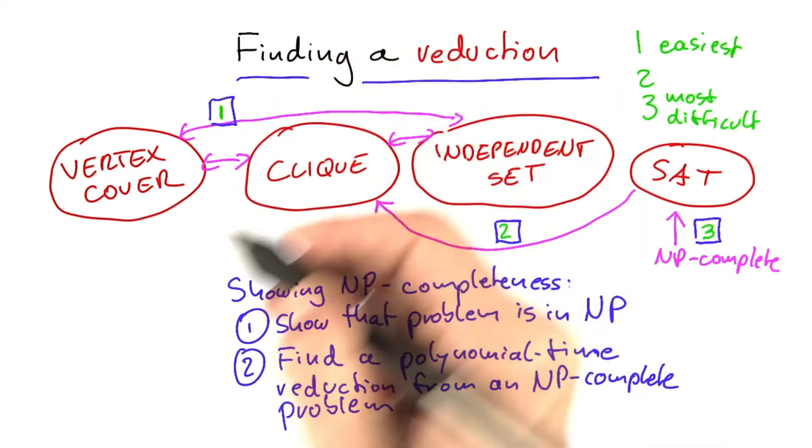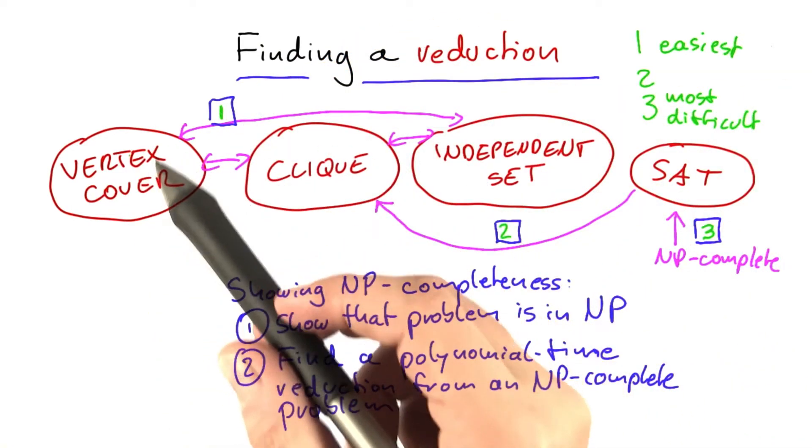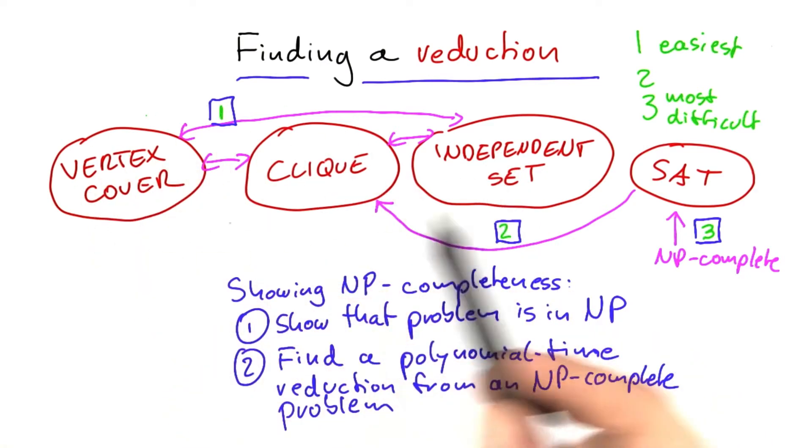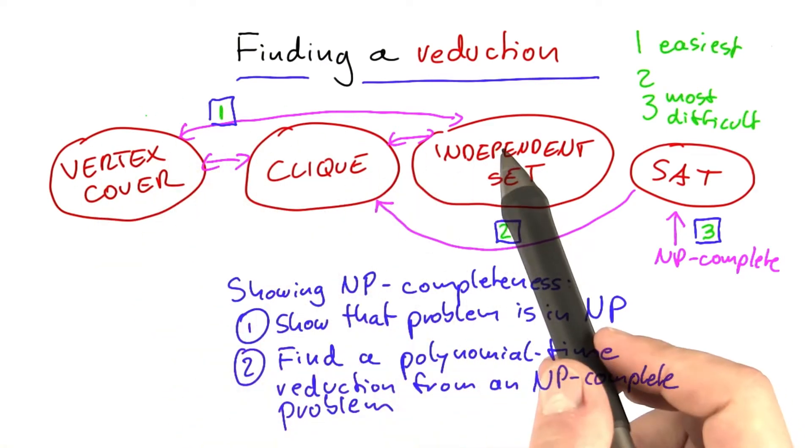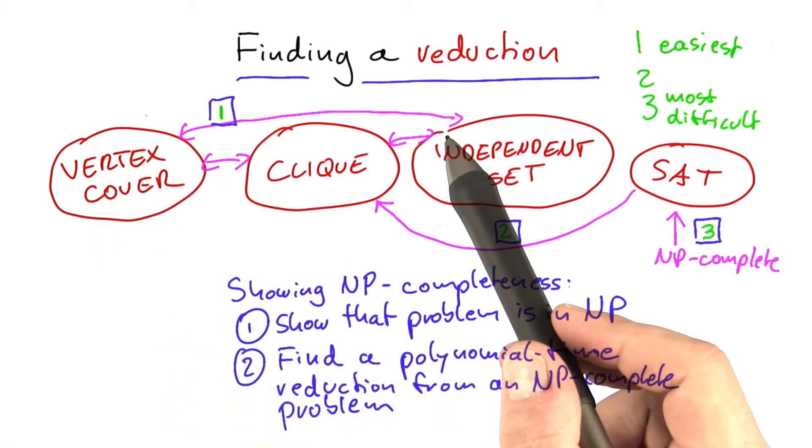And then in the first unit it still took some thought. But showing how vertex cover, CLIQUE, and independent set are related wasn't that difficult, because all three problems were asking questions about graphs.